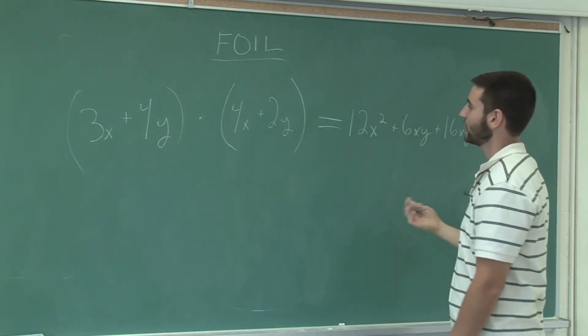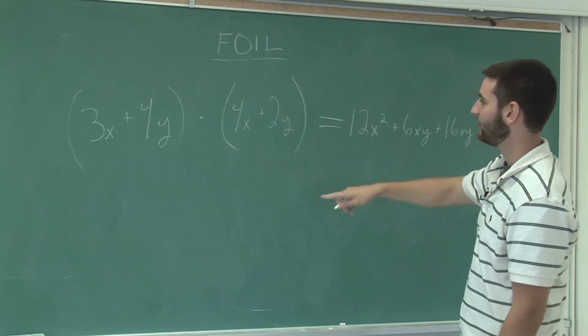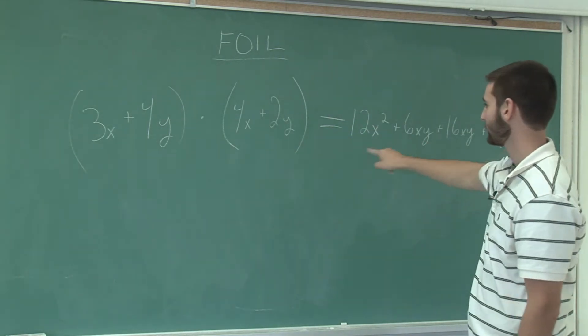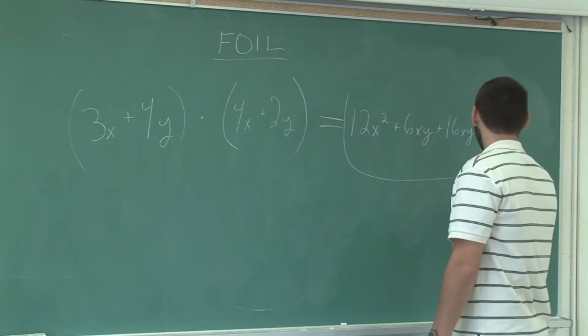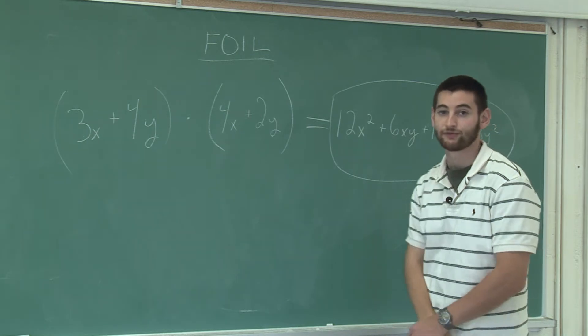To check our method, FOIL, First, Outers, Inners, and Last matches up. This is the product of two polynomials.